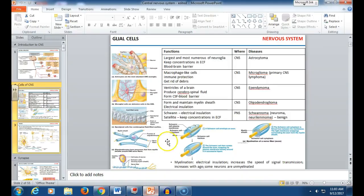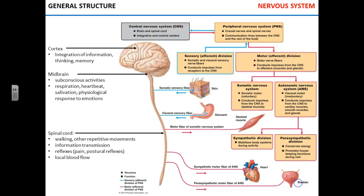We start talking about the nervous system today, and by far, the biggest topic volume-wise is the nervous system. The nervous system is broken into three parts: central nervous system first, peripheral nervous system and reflexes second, and special senses third. Imagine that's one system comprised of three exams. It's huge.